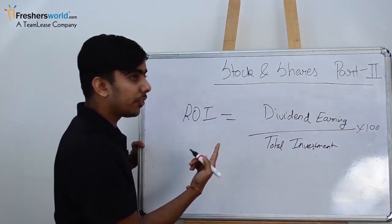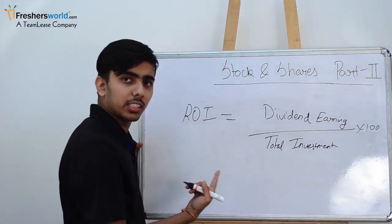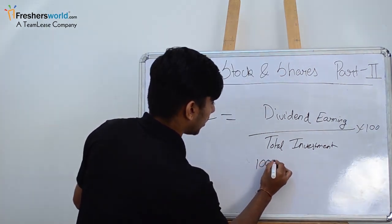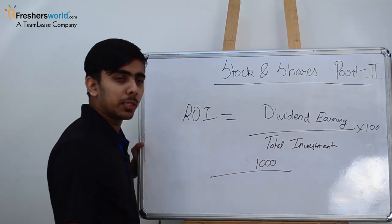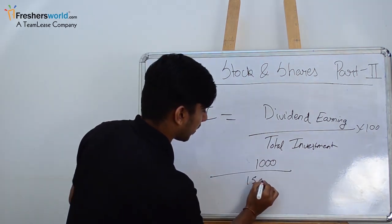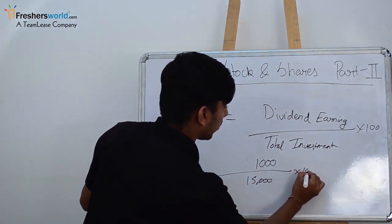How much dividend we earned? 1000 rupees. And how much investment we made? 15,000 into 100. So the answer will be 6.66 percent.